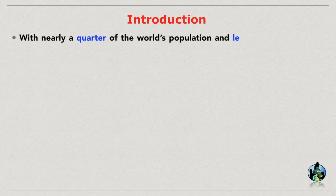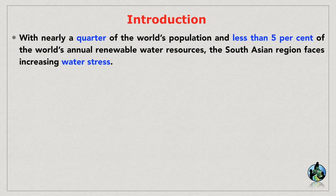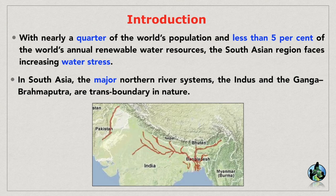Introduction: With nearly a quarter of the world's population and less than 5% of the world's annual renewable water resources, the South Asian region faces increasing water stress. In South Asia, the major northern river systems — the Indus and the Ganga-Brahmaputra — are transboundary in nature. In this video, I will discuss India's water disputes with its neighboring states.